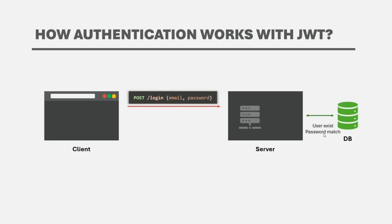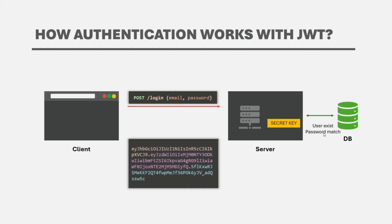If the user exists and the password is correct, a unique JSON Web Token is generated using a secret key stored on the server. This secret key is defined by the application developer and is stored on the server where the application is running. In our next lecture, when we start working on generating a JWT, we will also create a secret key which will be used to generate the token. The generated JSON Web Token itself is a base64 encoded string.